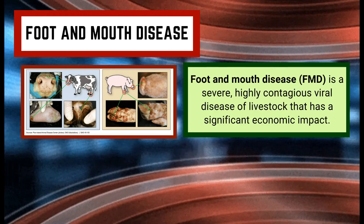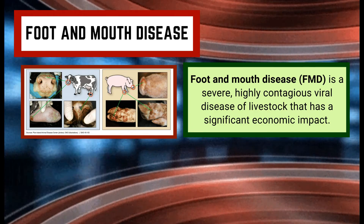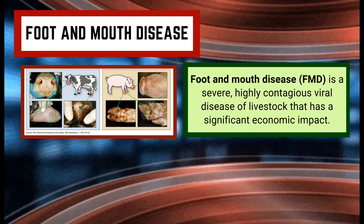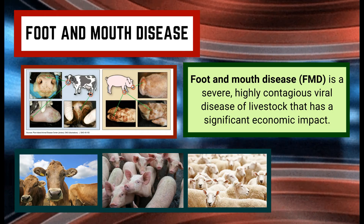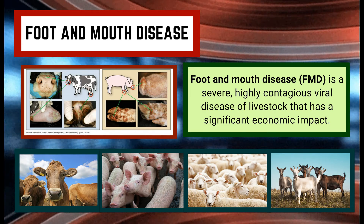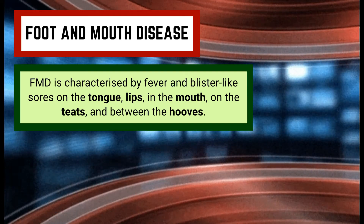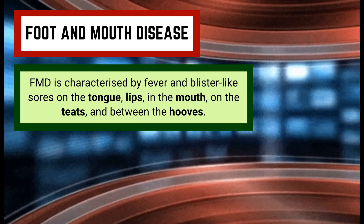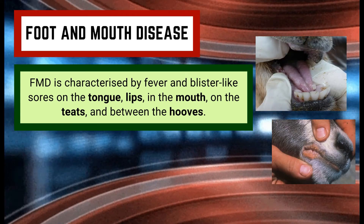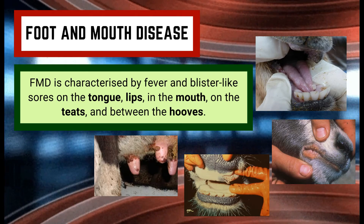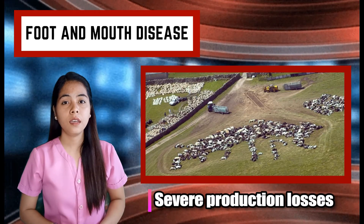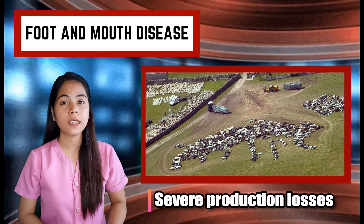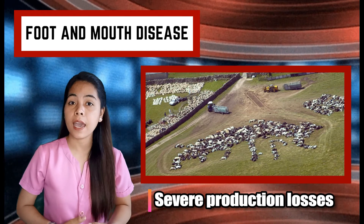Next up, Foot and Mouth Disease. Foot and Mouth Disease is a severe, highly contagious viral disease of livestock that has a significant economic impact. The disease affects cattle, swine, sheep, goats, and other cloven-hoofed animals. FMD is characterized by fever and blister-like sores on the tongue, lips, in the mouth, on the teats, and between the hooves. The disease causes severe production losses, and while the majority of animals recover, it often leaves them weakened and debilitated.